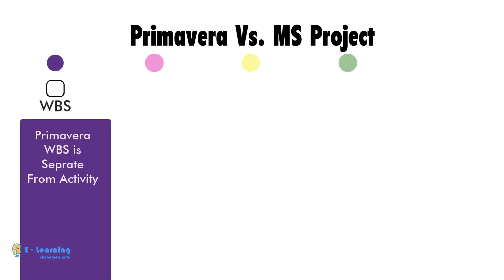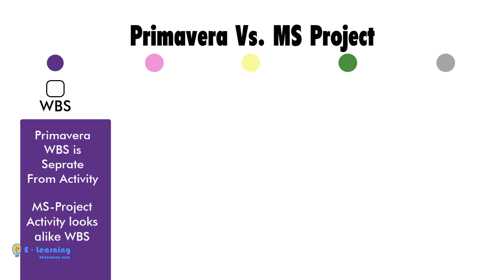In Primavera, WBS is created separately from activities — the WBS section is separated from the activity section. But this is not the case in MS Project.